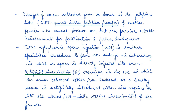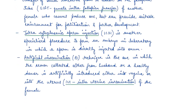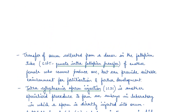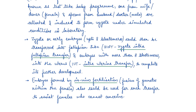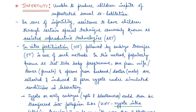Another method is Intracytoplasmic Sperm Injection (ICSI), where a sperm is directly injected into the ovum in a lab to form an embryo. There is also Artificial Insemination (AI), where semen collected from the husband or a healthy donor is artificially introduced either into the vagina or directly into the uterus — known as Intrauterine Insemination (IUI). These are methods to help people who cannot produce children naturally.